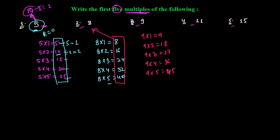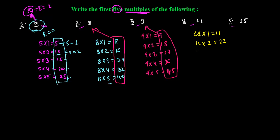9×5=45, so 45 is the fifth multiple of 9. These are the first five multiples of 9. Similarly, for 11: 11×1=11, so 11 is the first multiple of 11. 11×2=22, so 22 is the second multiple of 11. 11×3=33, so 33 is the third multiple of 11.